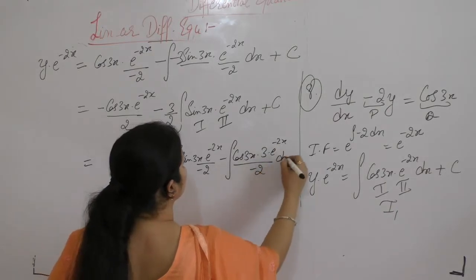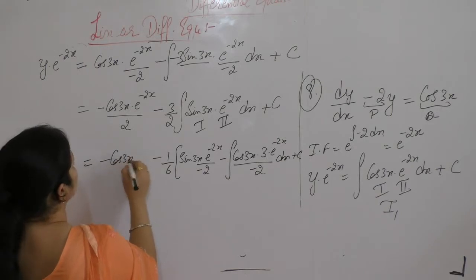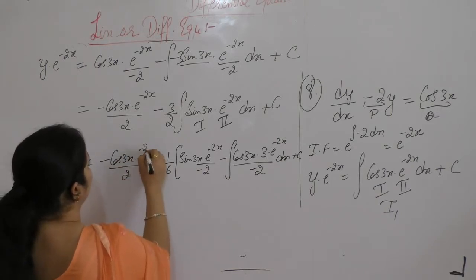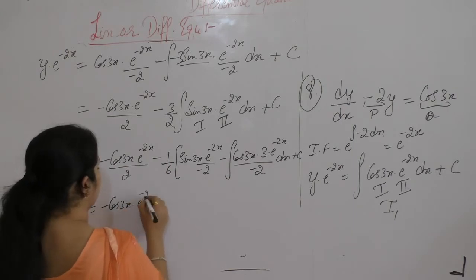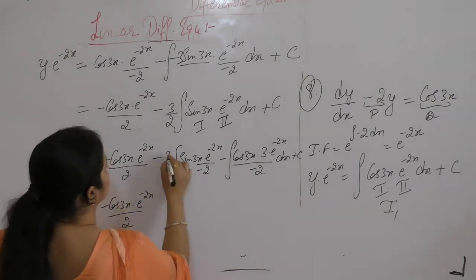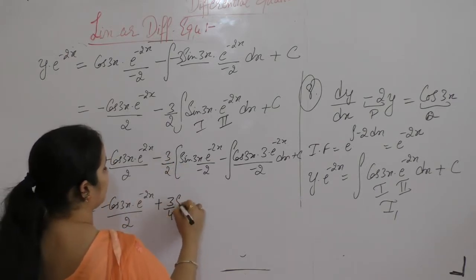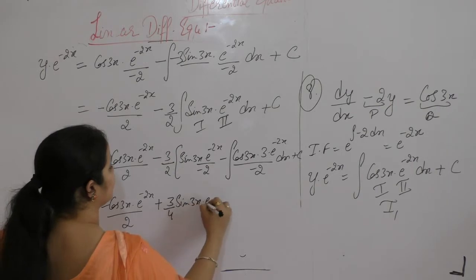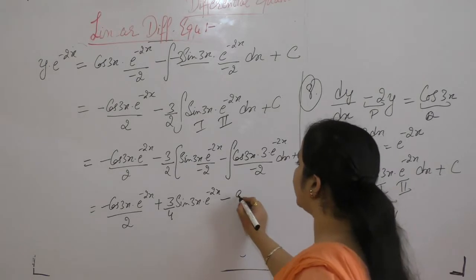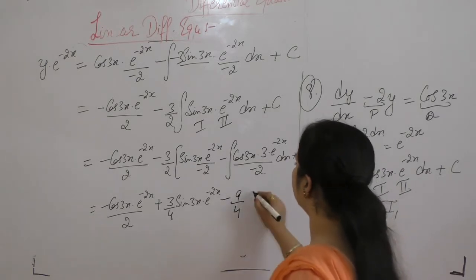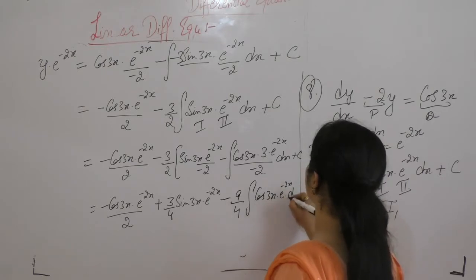Integral of e^(-2x) plus c minus cos(3x) by 2, e^(-2x) upon 2, minus minus plus 3 by 4 sin(3x) into e^(-2x), minus minus plus and minus, 3 to 9 by 4, integral of cos(3x) · e^(-2x) dx.